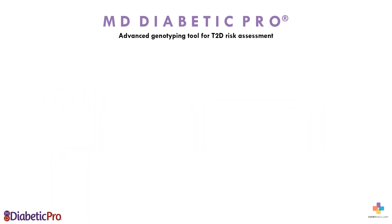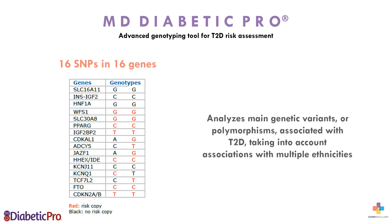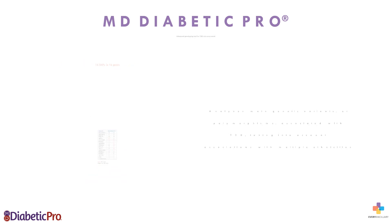MD Diabetic Pro is an advanced genotyping tool for type 2 diabetes risk assessment, analyzing 16 SNPs and 16 genes. This test analyzes the main genetic variants or polymorphisms associated with type 2 diabetes, taking into account associations with multiple ethnicities.